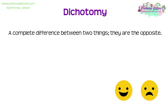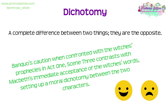Number seven is the word dichotomy. It's great for looking at contrast between characters or things. If there is a dichotomy between two things, there is a complete difference between them — they are totally oppositional. You can see this in lots of things in the play: there is a dichotomy between Banquo and Macbeth, between Macduff and Macbeth, and even between the words characters speak and what goes on inside their heads. In a sentence: 'Banquo's caution when confronted with the witches' prophecies in Act 1, Scene 3 contrasts with Macbeth's immediate acceptance of the witches' words, setting up a moral dichotomy between the two characters.' Banquo doesn't trust the witches, whereas Macbeth allows the prophecies to affect him so much that he kills the king to achieve them, rather than letting fate run its course like Banquo.